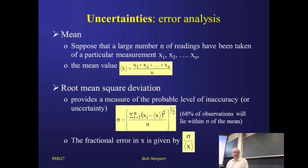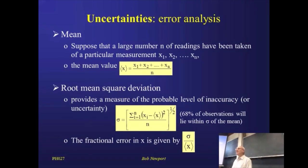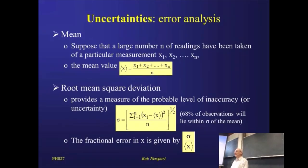The first thing we need to think about is the mean. Let's return to our example: you've made independent measurements of the width of this bench using the ruler, so we've got 45 data points, 45 values of a width. If I wanted to find the mean, we'd simply add all of your individual measurements together and divide by 45. That's the mean.